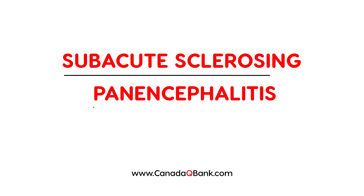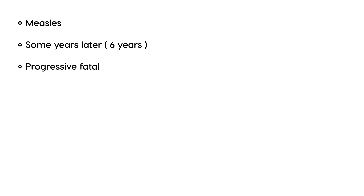Subacute sclerosing panencephalitis, also abbreviated SSPE. The clinical scenario is as follows: a child develops measles, a common childhood condition involving a rash, and some years later — on average about six years — the child develops this progressive, fatal brain disorder. SSPE is very rare, but if it does happen, it is almost always fatal.